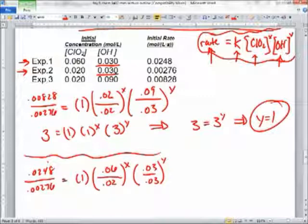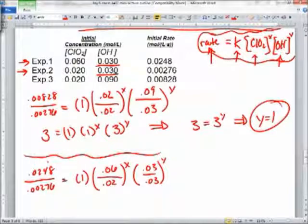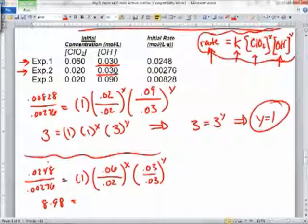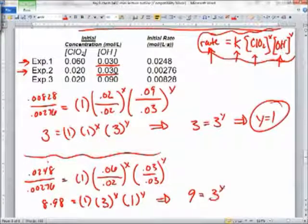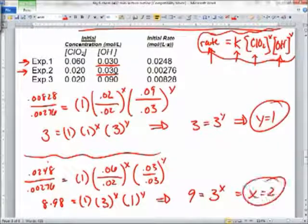0.0248 divide that by 0.00276, and I've got about 8.98. Just write this out, then we'll see. 8.98 equals 1 times 3 raised to the X, and then that'll be 1 raised to the Y. Now you're wondering about the 8.98. They're going to want you to round it to 9. So we really end up with 9 equals 3 to the X. It's 2. We got them.